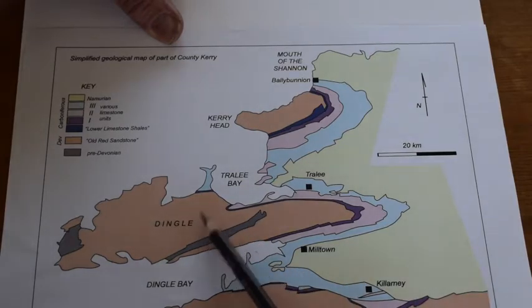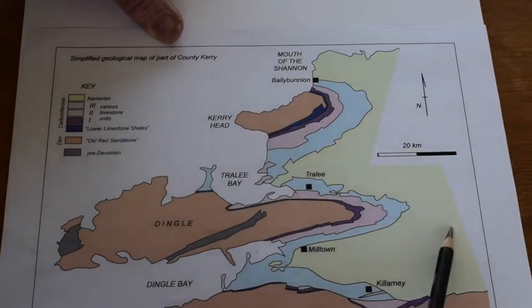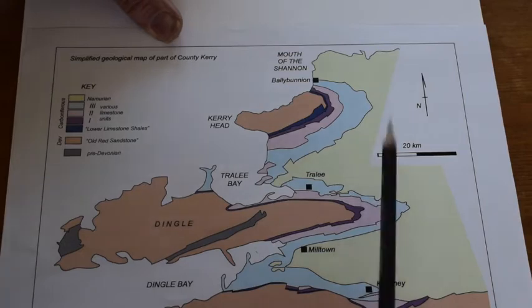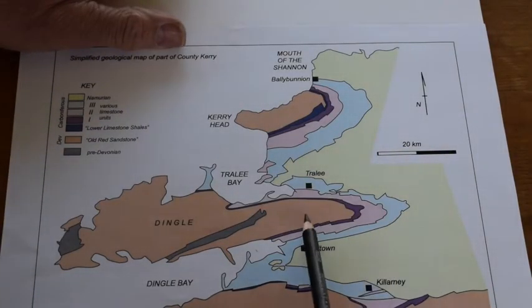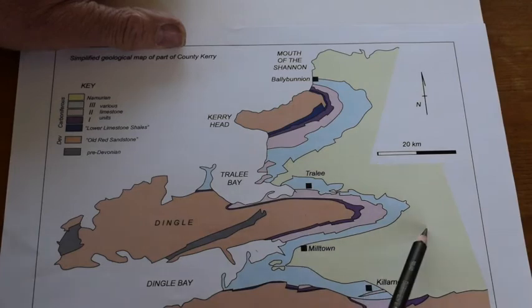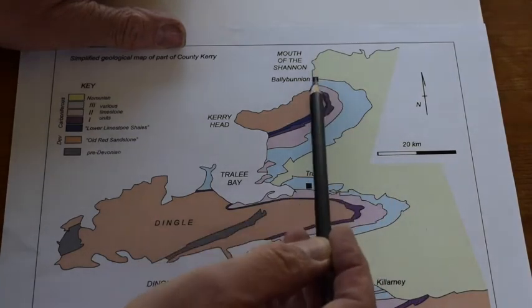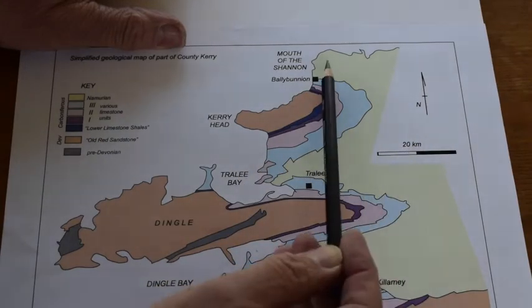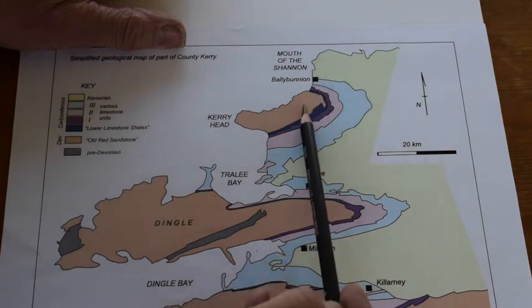As we move away from these peninsulas towards the east we go into the younger rocks, the green Namurian on this map. We've got old rocks here, young rocks here. Let's imagine going along the coast from the mouth of the Shannon across this west coast.